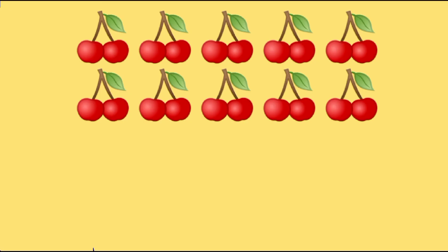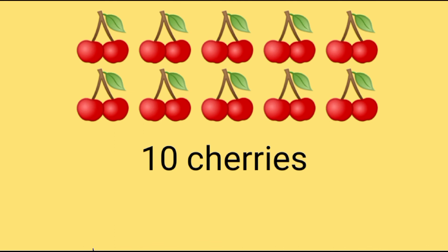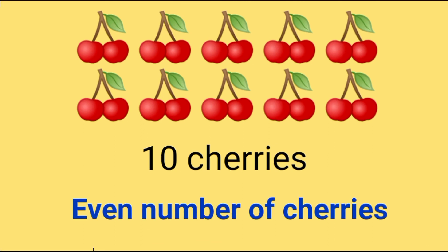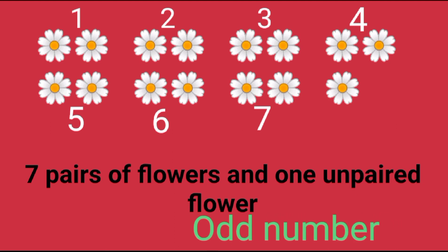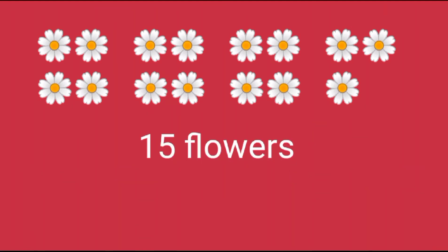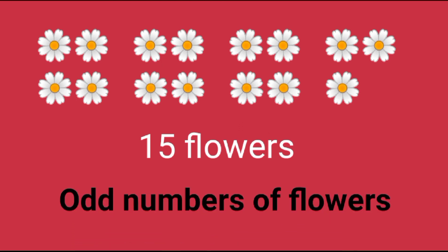Look at this picture children. How many cherries are there? There are 10 cherries. Is 10 odd or even? It is an even number, so an even number of cherries are seen here. Now look at this picture — how many pairs of flowers are seen? There are 7 pairs of flowers and 1 unpaired flower. If one flower is unpaired, then it is an odd number. Totally there are 15 flowers, and 15 is an odd number, so an odd number of flowers are seen here.